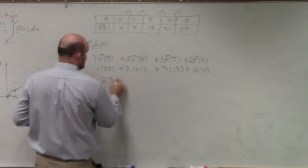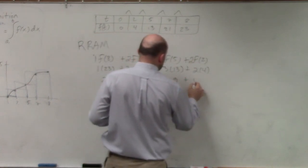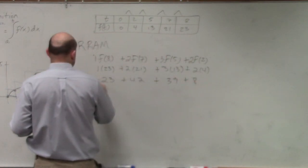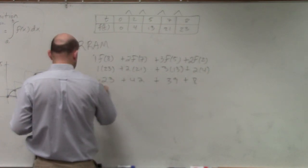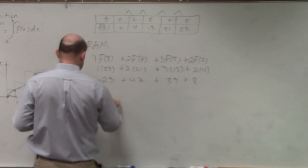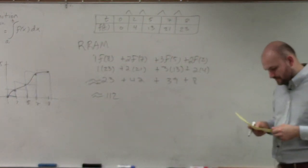And so therefore, we have 23 plus 42, 26, 39, plus 8. And that's going to be 112, all right?